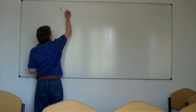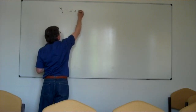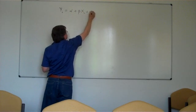So for example, suppose we have a regression model, yi equals alpha plus beta xi plus a random error term ui.